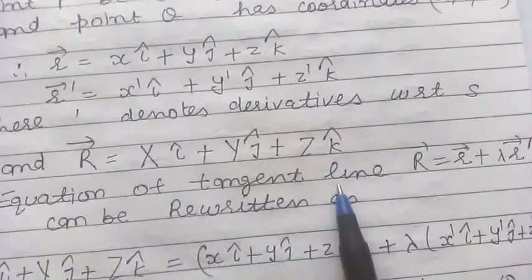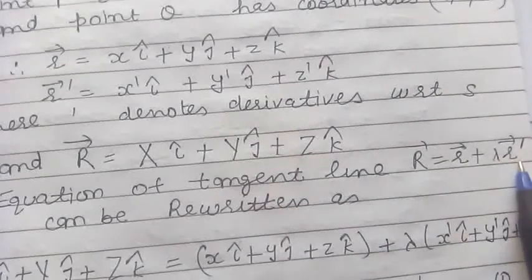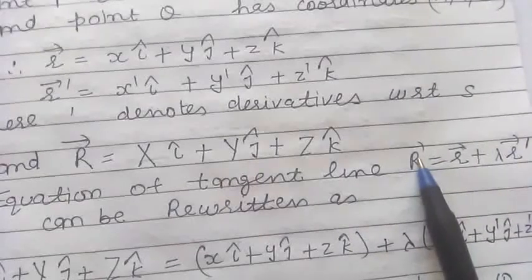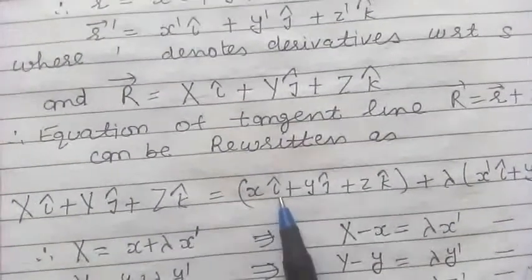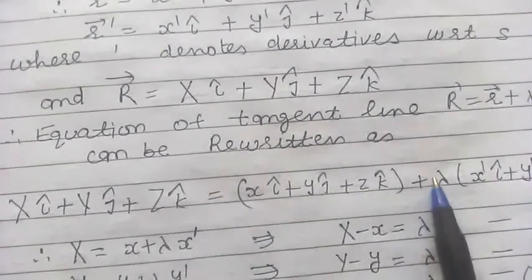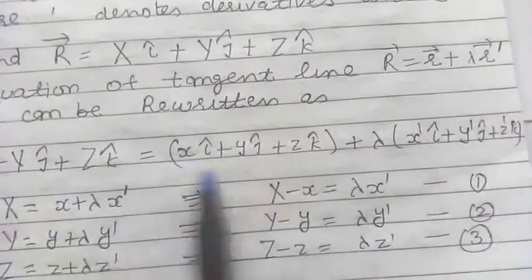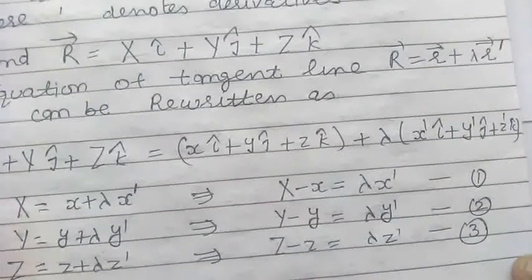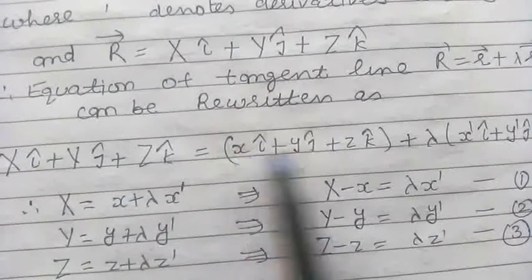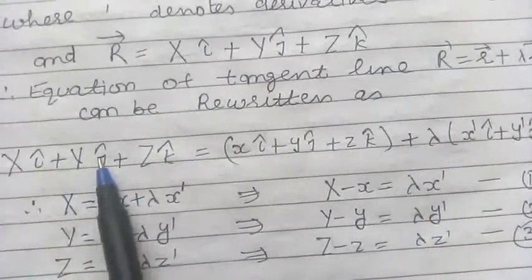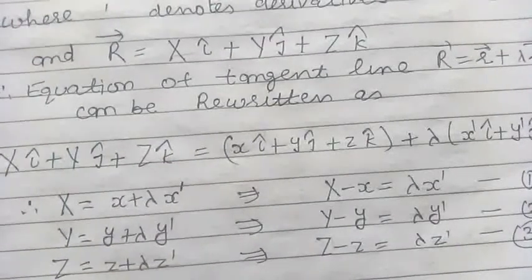The equation of the tangent line is vector R = vector r + λ · vector R'. Substituting the values of all three vectors R, r, and R', we get: Xi + Yj + Zk = (xi + yj + zk) + λ(x'i + y'j + z'k). Comparing the coefficients of i, j, and k on both sides: coefficient of i gives X = x + λx', coefficient of j gives Y = y + λy', coefficient of k gives Z = z + λz'.